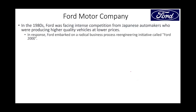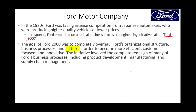In response, Ford embarked on a radical business process re-engineering initiative called Ford 2000 — a 20-year plan. The whole goal was to completely overhaul Ford's organizational structure, business processes, and most critically, the company culture. Ford needed to become more efficient and customer-focused, as customer focus had been a significant weakness. The initiative involved the complete redesign of many Ford business processes, including product development, manufacturing, and supply chain.